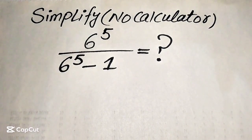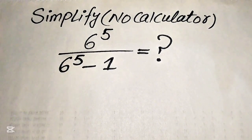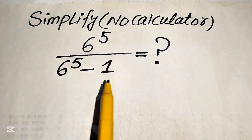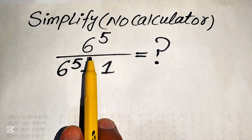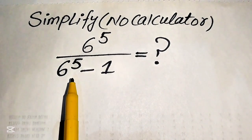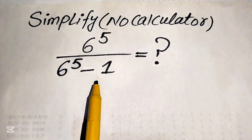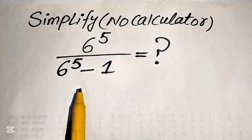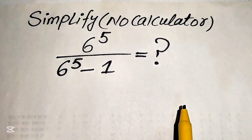Hello everyone, today I want to show you how to simplify this algebraic expression into the lowest form. If we have 6 to the power of 5 divided by 6 to the power of 5 minus 1, we write this algebraic expression into the simplified form.